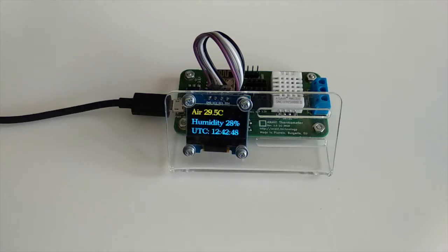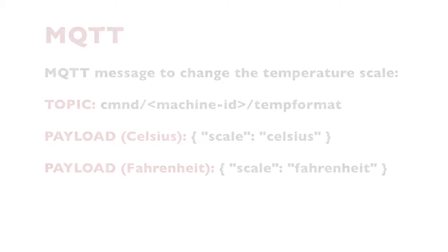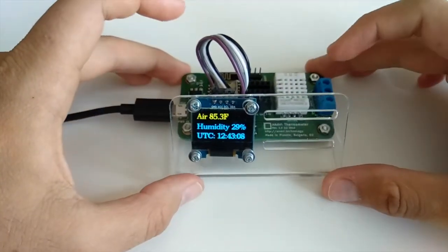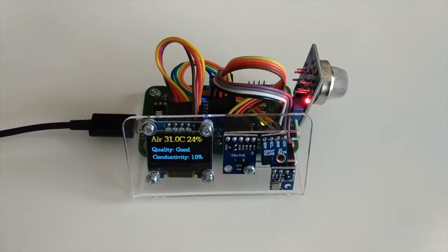The ANAVI Thermometer has been already configured initially to use the Celsius temperature scale. I'm sending an MQTT message with the following topic — the topic includes the machine ID, which is displayed at the initial setup or in the serial console in Arduino IDE when you connect the board. The payload of the MQTT message is a JSON that sets the scale either to Celsius or Fahrenheit.